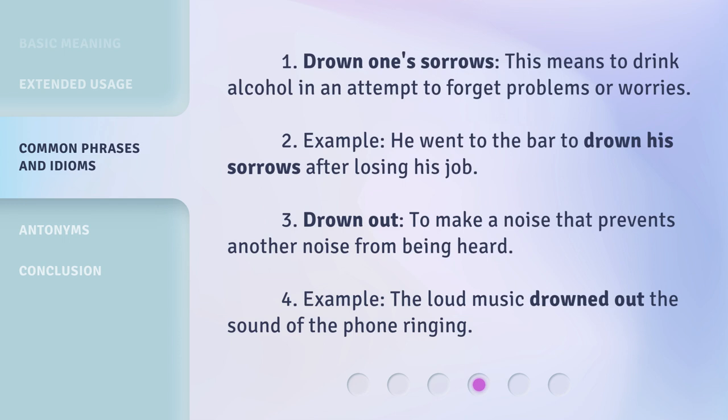Drown one's sorrows: this means to drink alcohol in an attempt to forget problems or worries. Example: 'He went to the bar to drown his sorrows after losing his job.' Drown out: to make a noise that prevents another noise from being heard. Example: 'The loud music drowned out the sound of the phone ringing.'